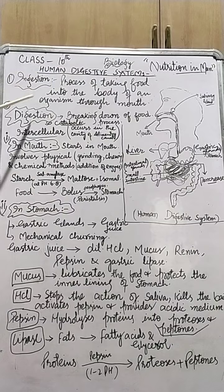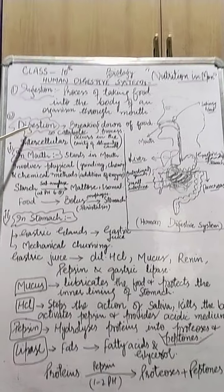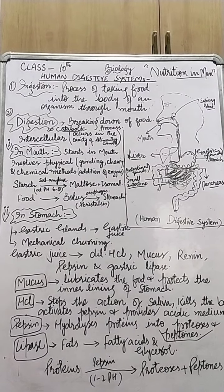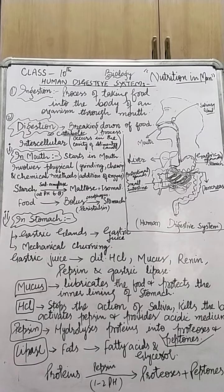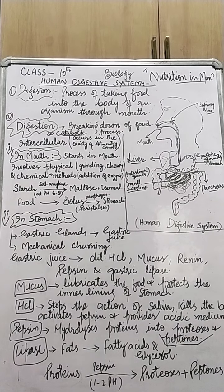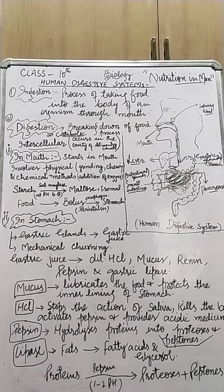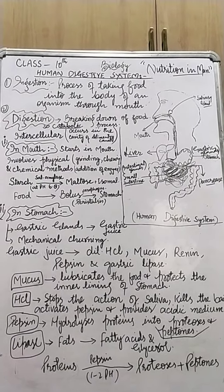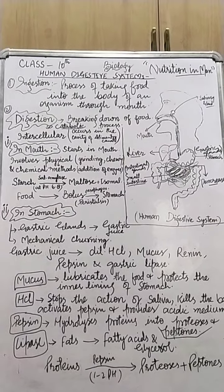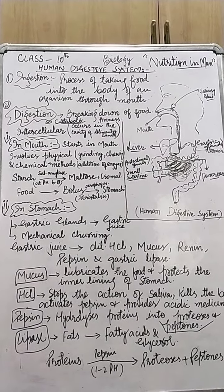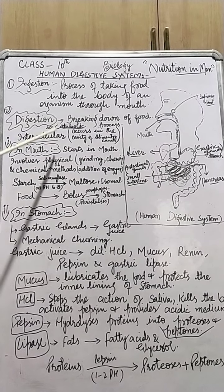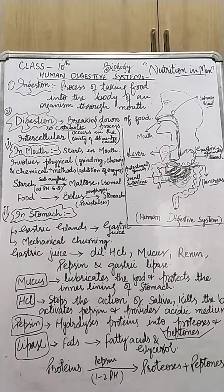After that starts the process of digestion. And what is digestion? It is the process in which the complex, large-sized, insoluble, non-diffusible, polymeric organic compounds like proteins, fats, complex carbohydrates that we obtain from different nutrients that we take as food are changed.